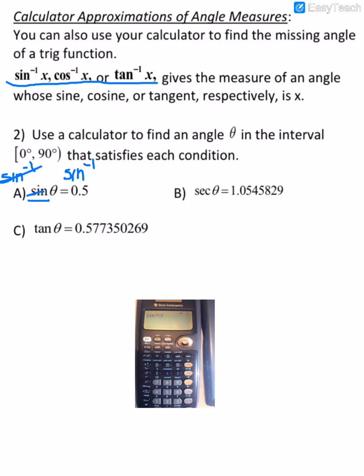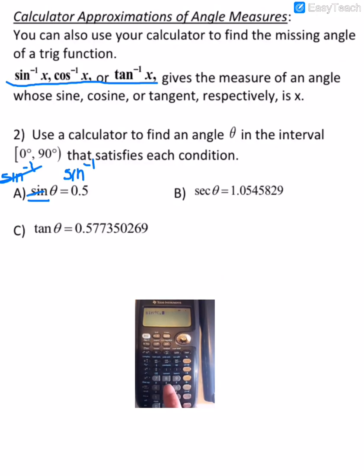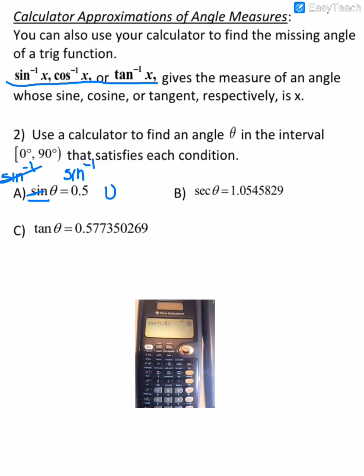And so we're finding sine inverse of 0.5, and that's 30 degrees. Okay, so theta is 30 degrees.